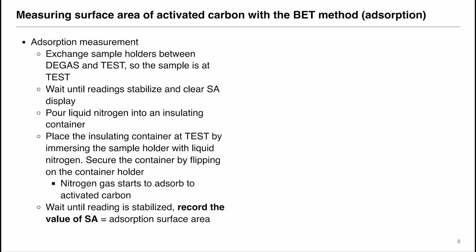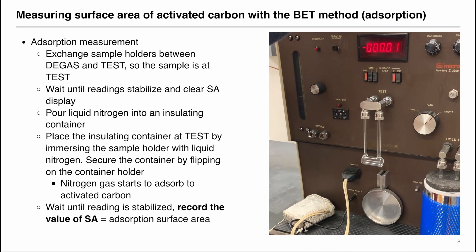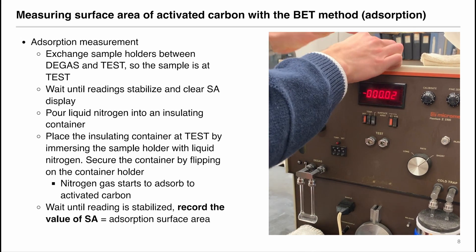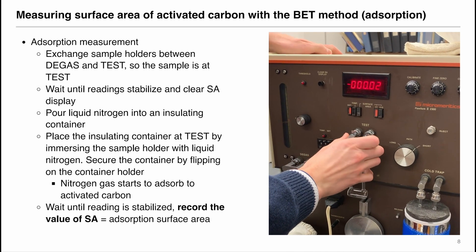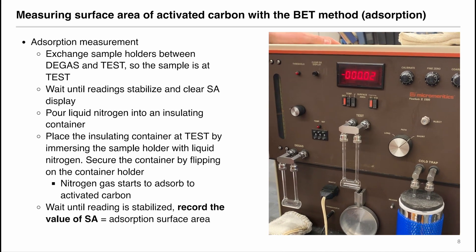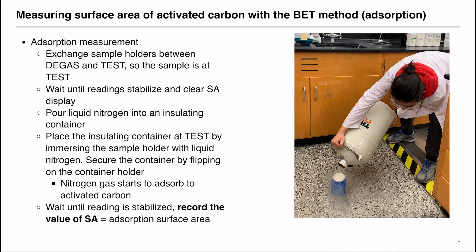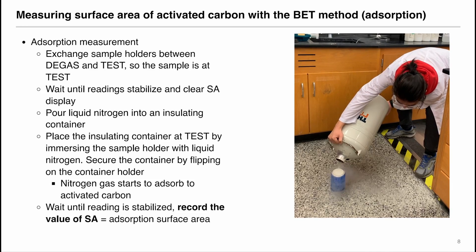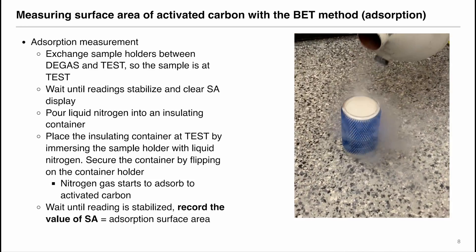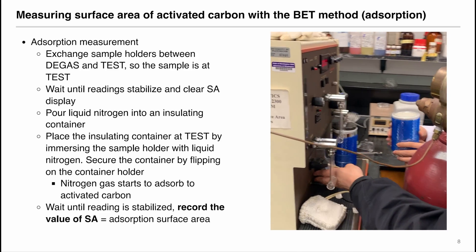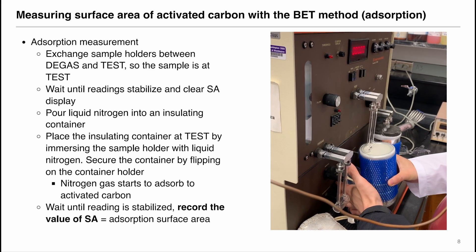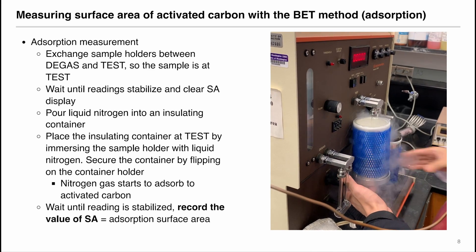After calibration, we are ready to make adsorption measurements. Start by exchanging the sample holders between degas and the test position so that the sample is at the test position. Wait until the reading is stabilized and then clear the SA display. And pour some liquid nitrogen into an insulating container that was set aside so that the nitrogen is deep enough to submerge the sample holder. And place the insulating container at the test position by submerging the sample holder with the liquid nitrogen. And secure the container by flipping on the container holder.